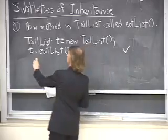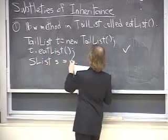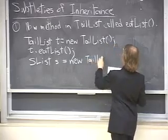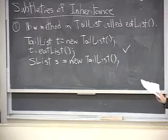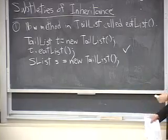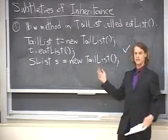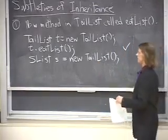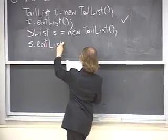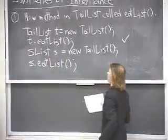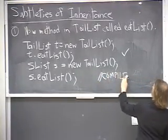But what if I declare an SLIST S and make it point to a new TALELIST? Now the static type is SLIST and the dynamic type is TALELIST. Since the dynamic type is TALELIST, we have a TALELIST object - we should be able to call EATLIST on it, right? So let's try S.EATLIST. And this does not work. The compiler throws a hissy fit.